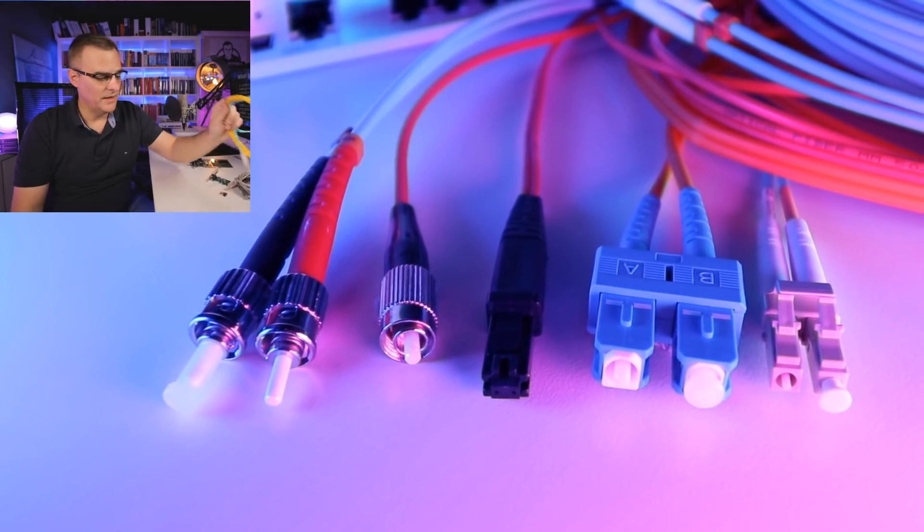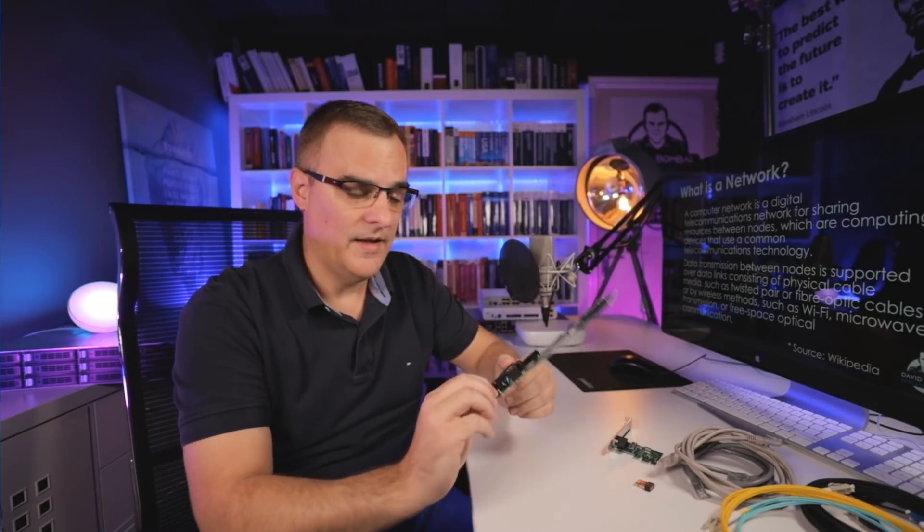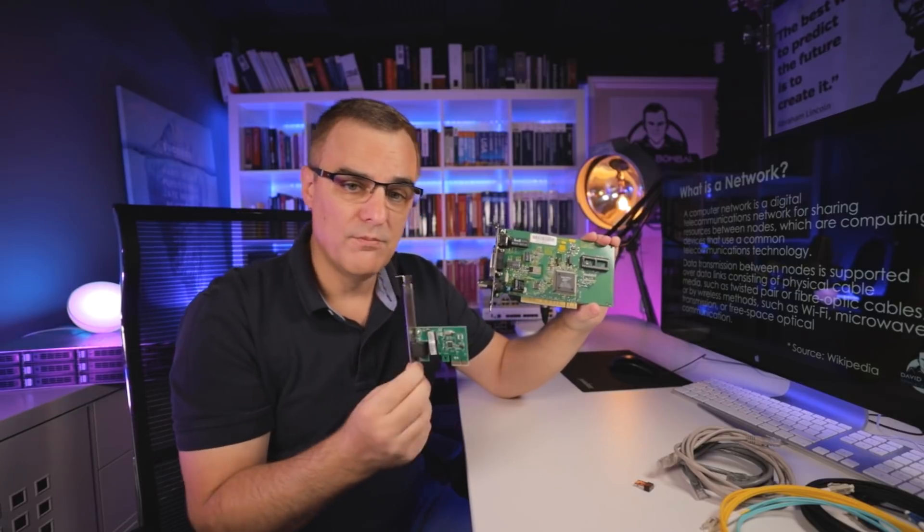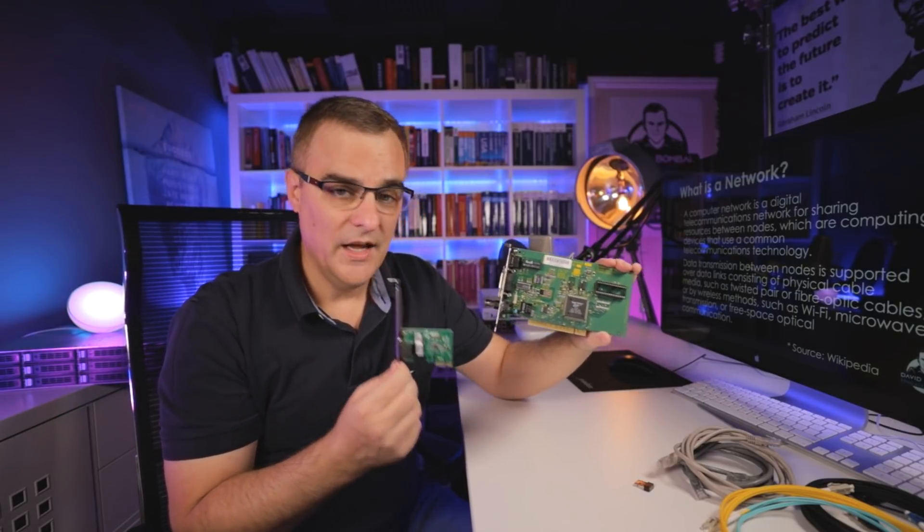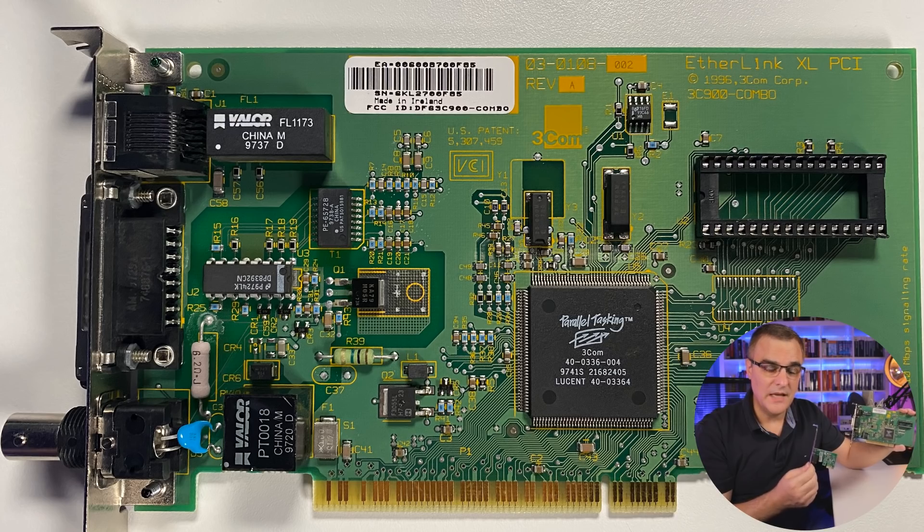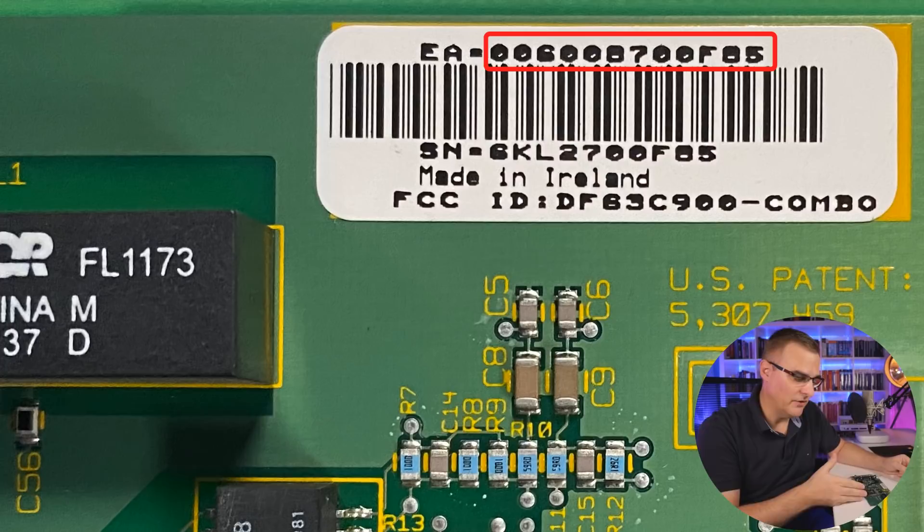But the idea is that I have a network interface card like this, or a more modern example like this. This gets inserted into a computer, and this is how I gain access to the network. A network interface card has a MAC address, or media access control address. That is essentially a burnt-in address, burnt-in by the manufacturer,